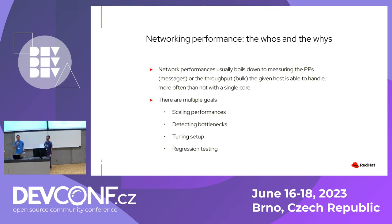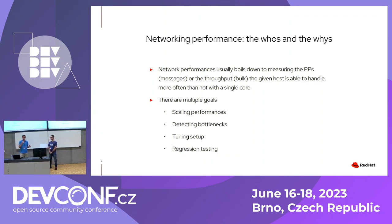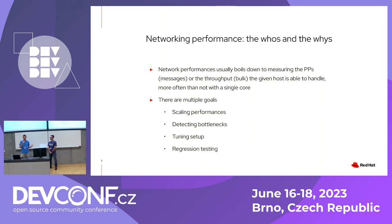What's the big deal about networking performance? In the end, they boil down to measuring the maximum amount of packets per second, messages per second, or max throughput that a given host is able to process — usually on a single core. That is mostly by convention, because we hope that things will scale on multiple cores, even though that is not always true, and also because the setups are much simpler when we use a single core.